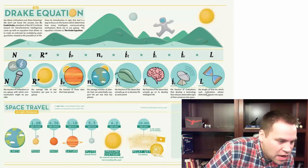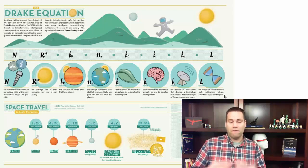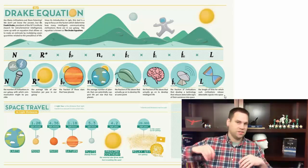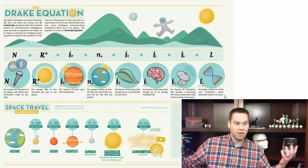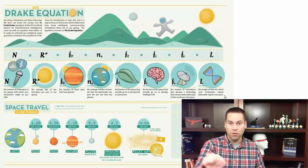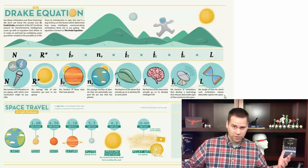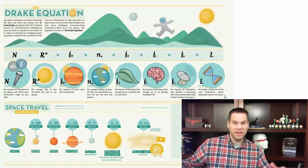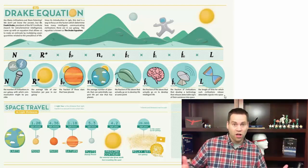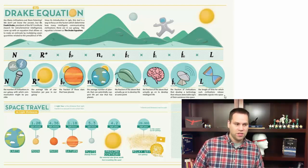The last variable is the length of time for which such civilizations release detectable signals into space. For Earth, it's been about 50 years of television and radio communications. We're increasingly using cable lines, so maybe we won't be using radio signals in 100 years. Or a civilization might develop and destroy itself — like our Cold War could have — so civilizations might just not last very long.